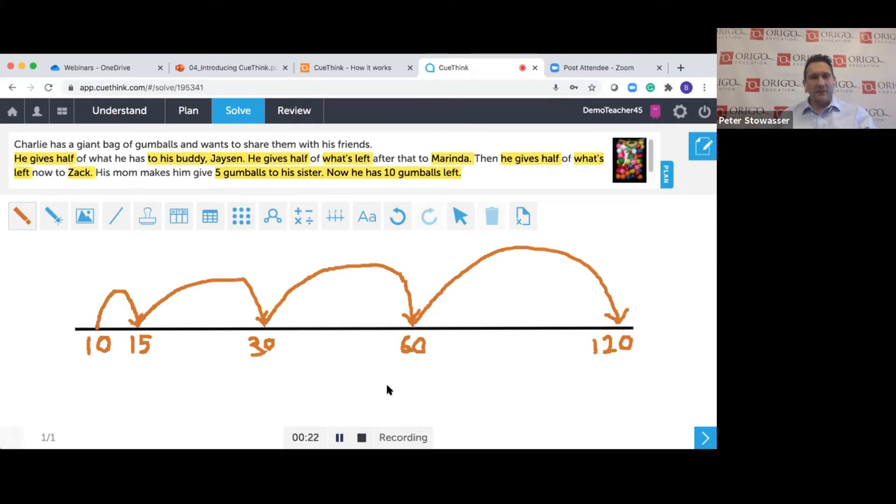So we added five to make 15. We then doubled 15 to make 30, doubled 30 to make 60 and doubled 60 to make 120. I think that Charlie started with 120 gumballs.